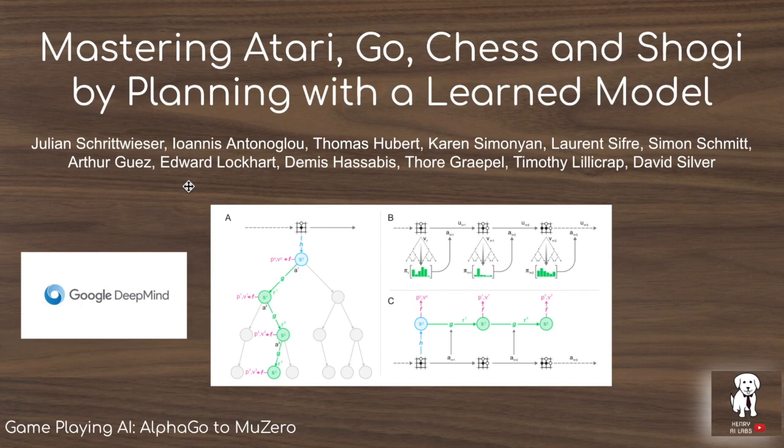MuZero extends this dramatically, showing that the algorithm can be used on the Atari suite — very visually complex games like Brick Breaker. MuZero generalizes the planning and learning with the Monte Carlo tree search algorithm — the core ideas from the AlphaGo series — by not requiring an original perfect dynamics model.